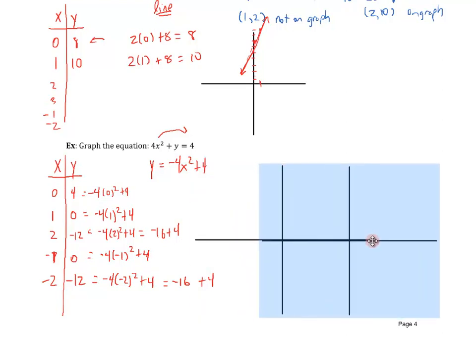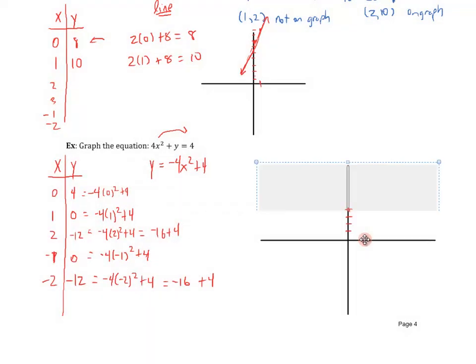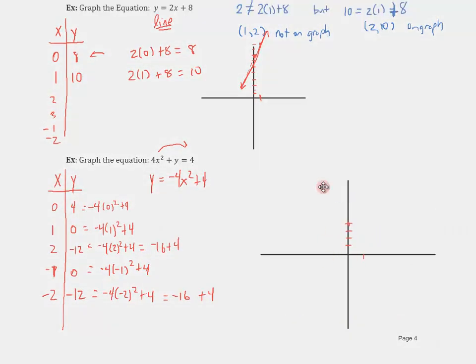Let's plot these 5 points on our coordinate system and see what we get. At 0, I'm at a height of 4. At 1, I'm at a height of 0. And then at 2, I'm down 12. Point is right there.